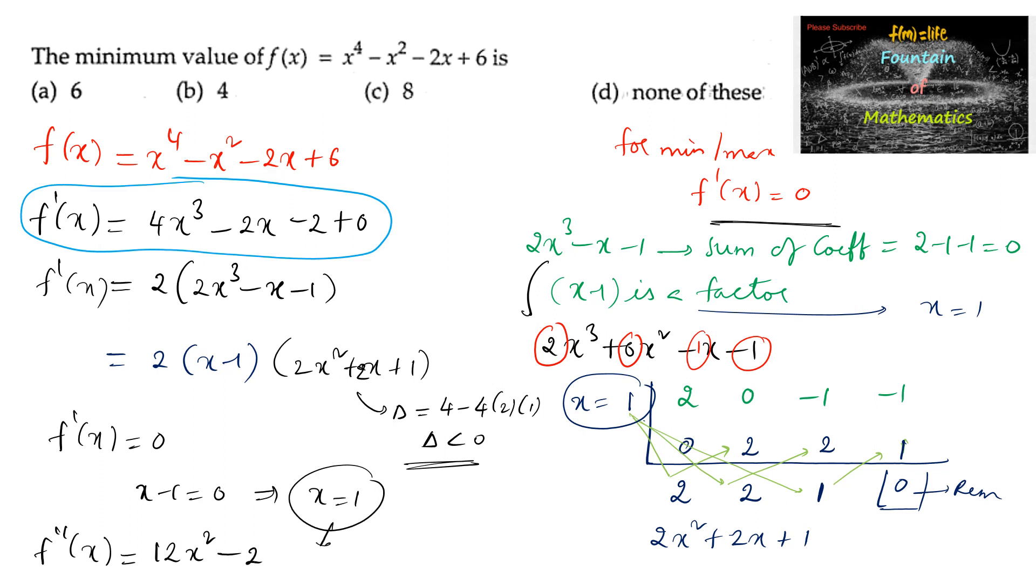And at x is equal to 1, means f''(1) is equal to 12 times 1 squared minus 2, which is equal to 12 minus 2 is 10, which is positive. When f''(1) is positive, which means that at x is equal to 1 there is a minimum value.